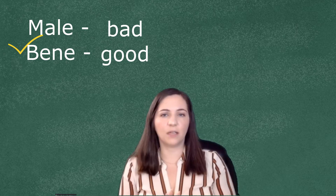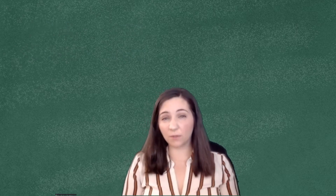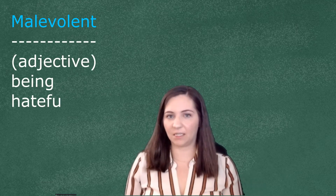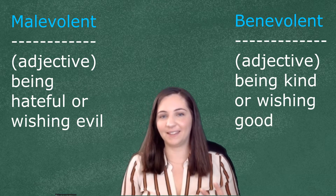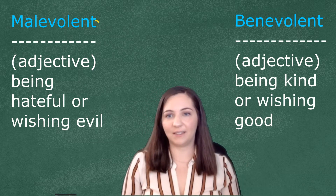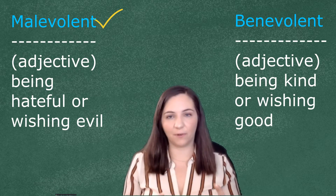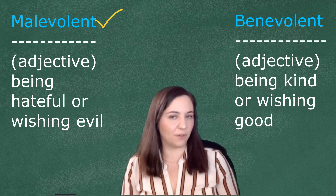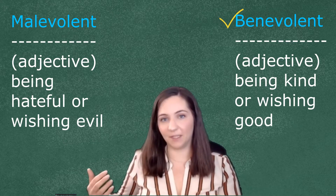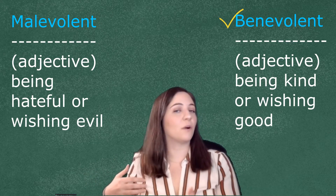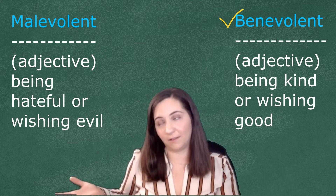Let's look at how these words are used in English. The first one is 'malevolent' and the next one is 'benevolent.' Malevolent means that you are being hateful or wishing evil or illness onto somebody. Benevolent means that you are being kind or wishing goodwill onto somebody.